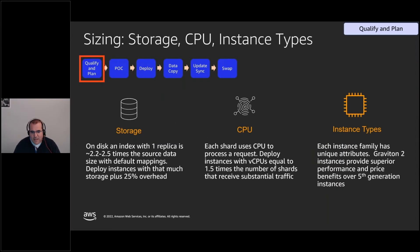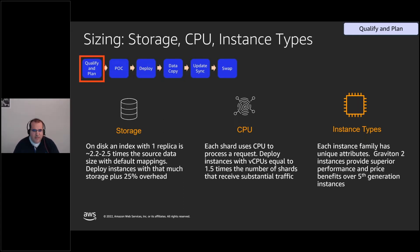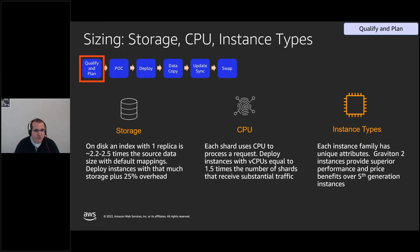In terms of sizing, if migrating from OpenSearch on-premises or Elasticsearch, you have a solid understanding of CPU, storage, and instance types needed. For other platforms it's harder to estimate. Key rules include: an index with one replica is about 2.5 times the size of the source data, always leaving about 25% overhead; and 1.5 virtual CPUs per shard with substantial traffic is another good rule of thumb.